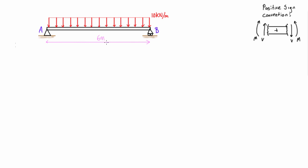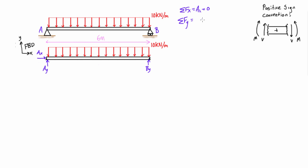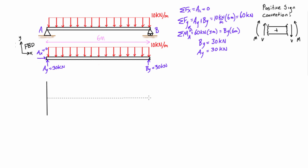So the first thing that we need to do is draw the free body diagram and then calculate for the reactions. So we find that AY is equal to 30 kilonewtons and BY is also equal to 30 kilonewtons.